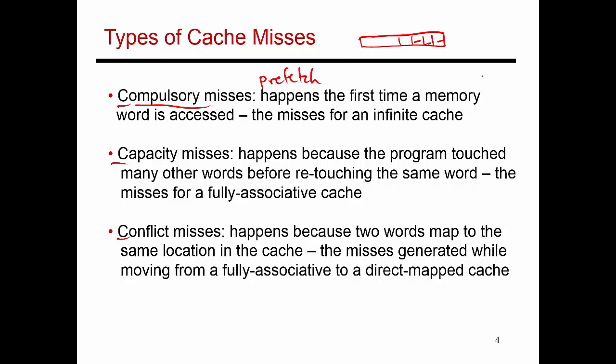Prefetching can help avoid compulsory misses. If I design an infinitely-sized hypothetical cache, any misses I incur are due to compulsory accesses, because once a block comes in it never leaves — it always yields cache hits. So any misses are caused by a first touch to that block. I can run a simulation with an infinite cache, and any misses in that simulation are because of compulsory accesses.